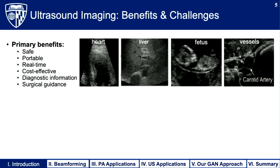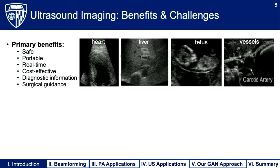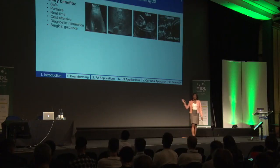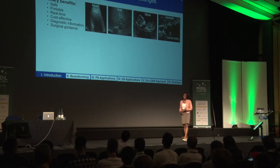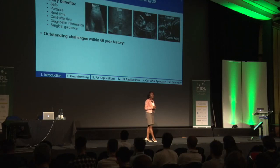Ultrasound is ubiquitous in the clinic and can be used to visualize an array of different anatomical structures. There are several primary benefits over other medical imaging modalities used today: it's safe and doesn't require harmful ionizing radiation, it can be portable — fitting in a clinician's pocket — it is cost-effective, and it can provide real-time views of anatomy. As you can see here, you're seeing the left ventricle of a beating heart, and ultrasound can also provide both diagnostic and surgical information.